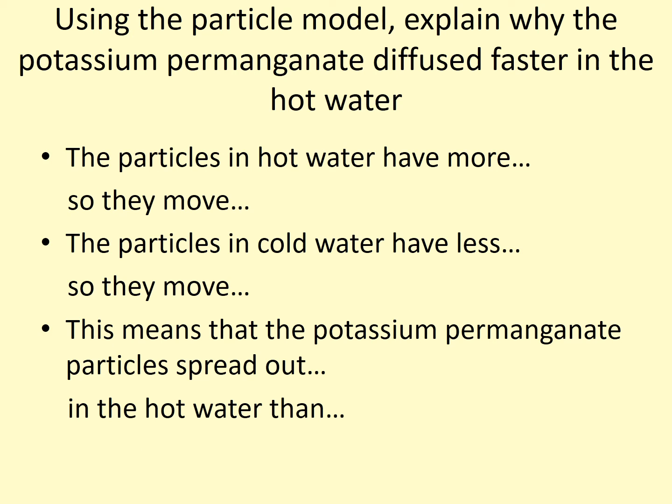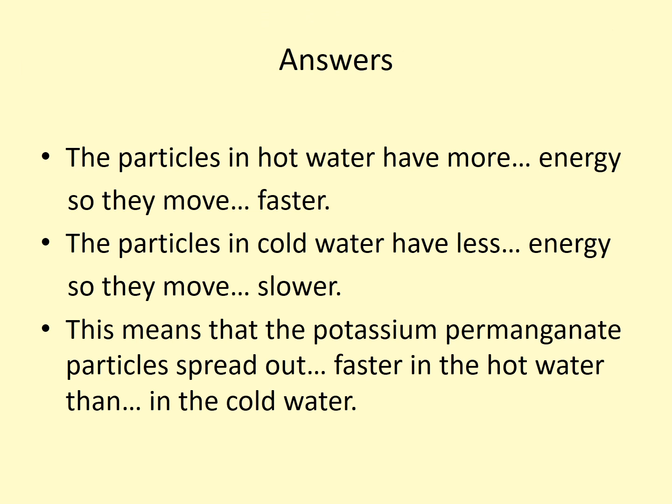Next task: using the particle model, explain why the potassium permanganate diffused faster in the hot water. You've got sentence starters there — pause the PowerPoint now, write down the sentence starters and then try to complete them. The answers: the particles in the hot water have more energy, so they move faster. The particles in cold water have less energy, so they move slower. This means that the potassium permanganate particles spread out faster in the hot water than in the cold water.